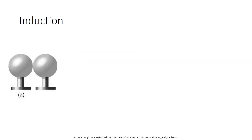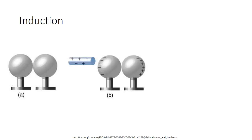Induction is the charging of an object without direct contact. In part A, both metal spheres are neutral. In part B, a positively charged rod is brought near the left sphere. Since the electrons like being near the protons, the electrons move closer to the rod. Both spheres are touching, so the electrons in the right metal sphere transfer to the left sphere to be by the positively charged rod too.